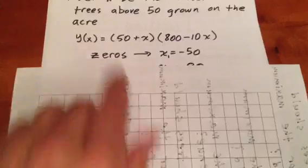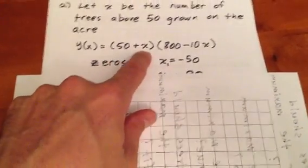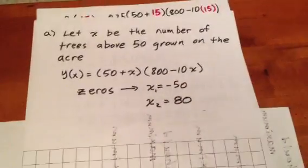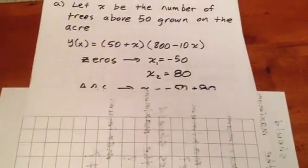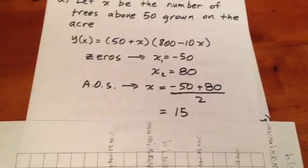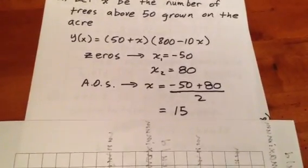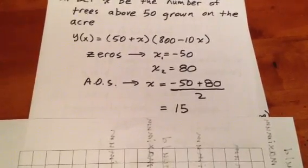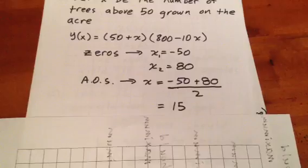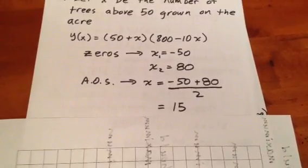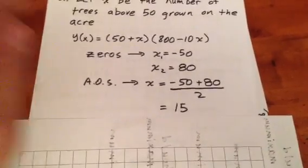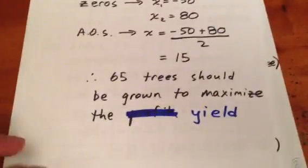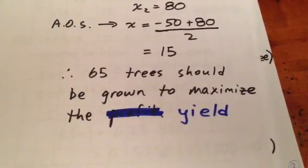Well we have two zeros. Our first zero here is going to be at X equals negative 50 and our second zero, which we get from this factor, will be at X equals 80. We can find our axis of symmetry now and we see that our axis of symmetry is at 15. Since this is a downward opening parabola, that means that our maximum yield possible will occur when X equals 15. Well, remember the number of trees is 50 plus X. So that means if X equals 15, 50 plus X is 65. Our farmer should grow 65 trees to be able to maximize her yield.